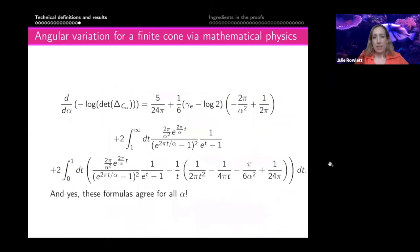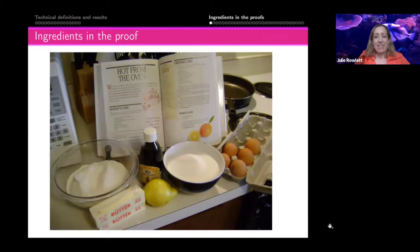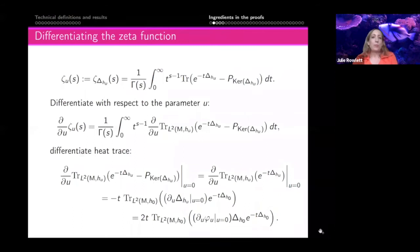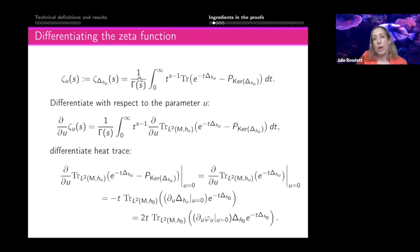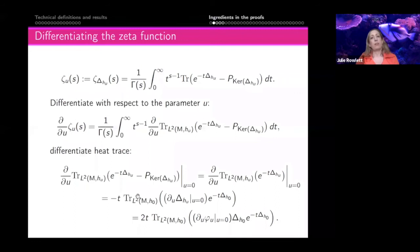Let's get into the ingredients of the proof. In the case where the conformal factor is smooth, we differentiate everything — taking the derivative with respect to u and moving the derivative inside the integral. Because of the smoothness of the conformal factor this is fine. The projection onto the kernel is the same throughout the whole family, so that part doesn't change. We can then differentiate the trace.